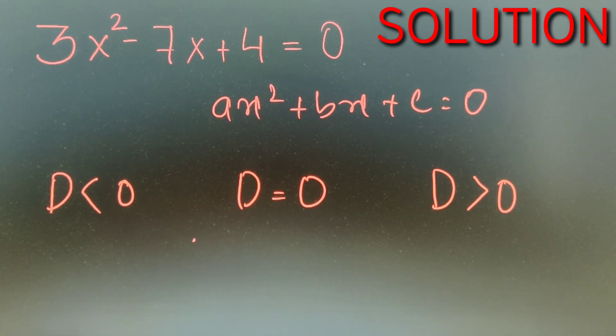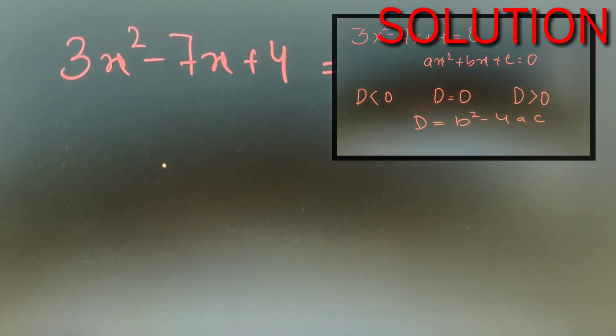Now the value of the discriminant is equal to b square minus 4ac. So if the value of b square minus 4ac is less than 0, then there are no real solutions. If equal to 0, then only one real solution, and if greater than 0, then 2 real solutions.